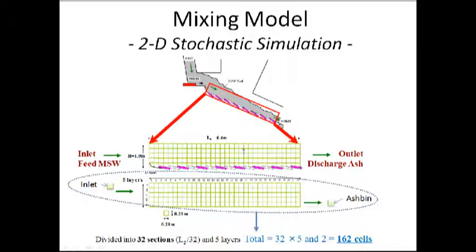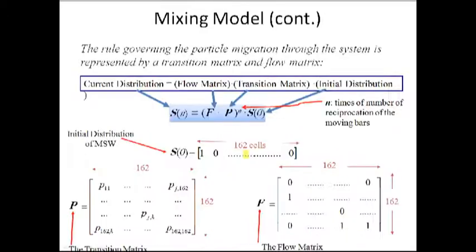Let me talk about mixing model. We chose two-dimensional stochastic model. The combustion chamber as MSW bed is divided into 32 sections and five layers and one inlet and ash beam, so total is 162 cells.